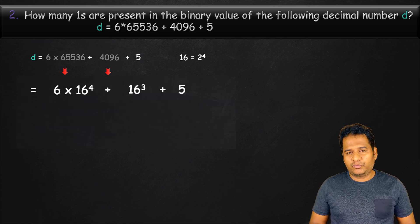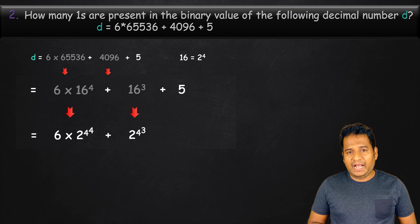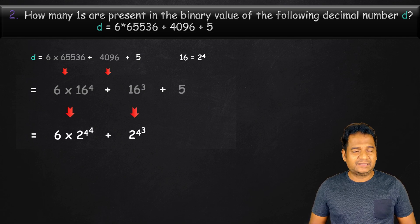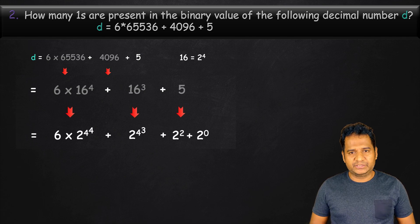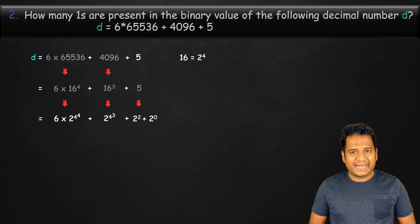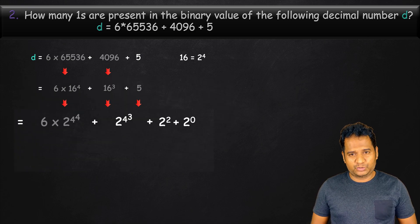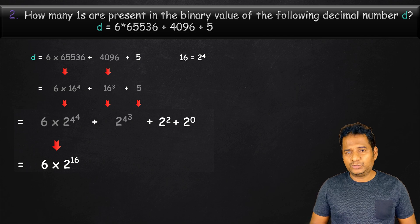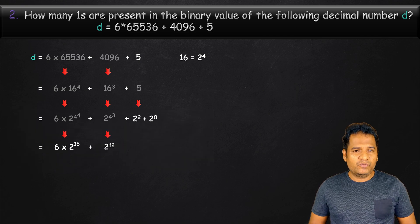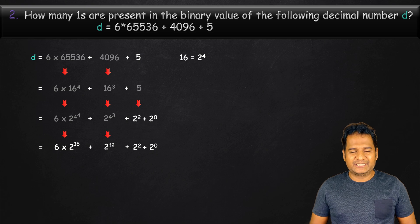We can substitute 2 power 4 for the 16. And the 5 can be represented as sum of 2 power 2 and 2 power 0. We can then write 2 power 4 power 4 as 2 power 16 and 2 power 4 power 3 as 2 power 12. Now, we have unique powers of 2 in the expression.